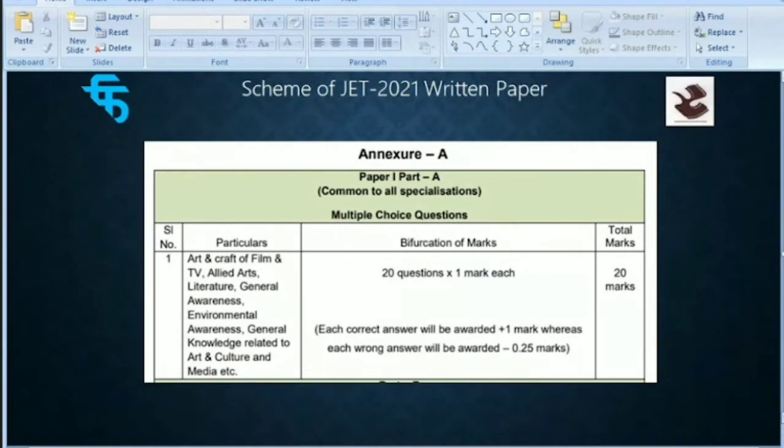Now there is going to be negative marking. Please pay attention to this. For the 20 questions worth 20 marks, one right answer is 1 mark. But each wrong answer will have a deduction of minus 0.25 marks. This is Paper 1 Part A, common to all specializations.